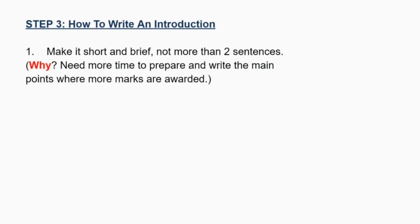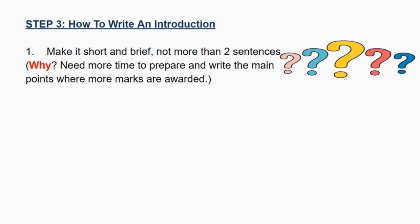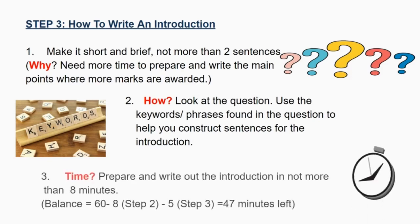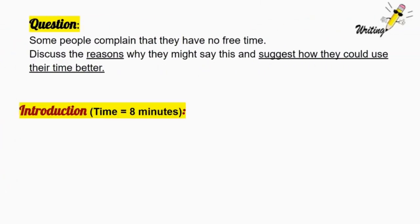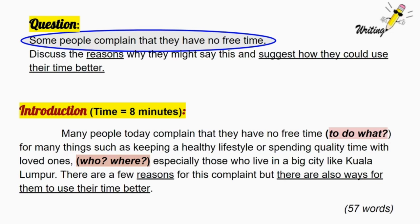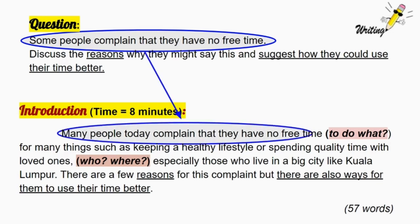Step 3: how to write an introduction. Number one, make it short and brief, not more than two sentences. Students need more time to prepare and write the main points where more marks are awarded. Number two, look at the question and use the keywords or phrases found in it to help construct sentences for the introduction. Number three, prepare and write out the introduction in not more than eight minutes. Identify the keywords or phrases and try to repeat them in the introduction as shown here.